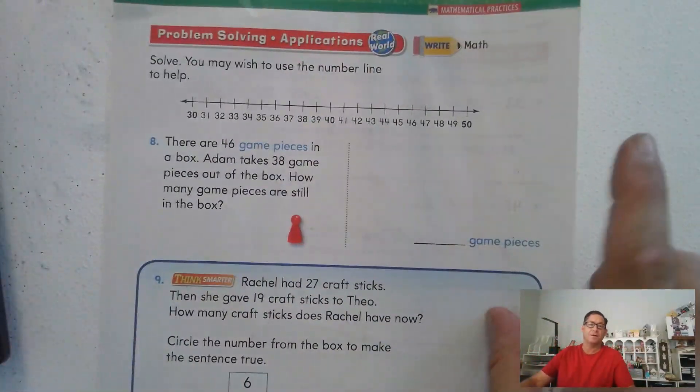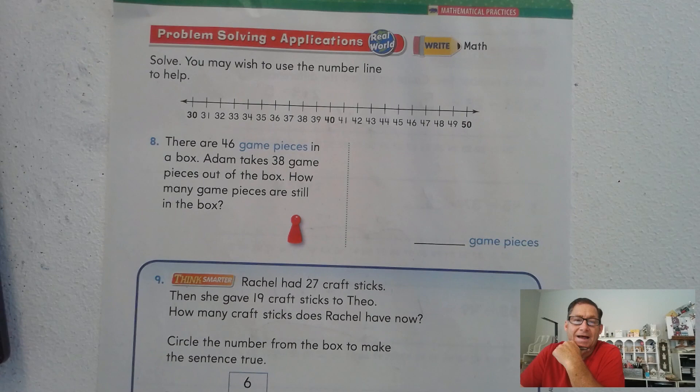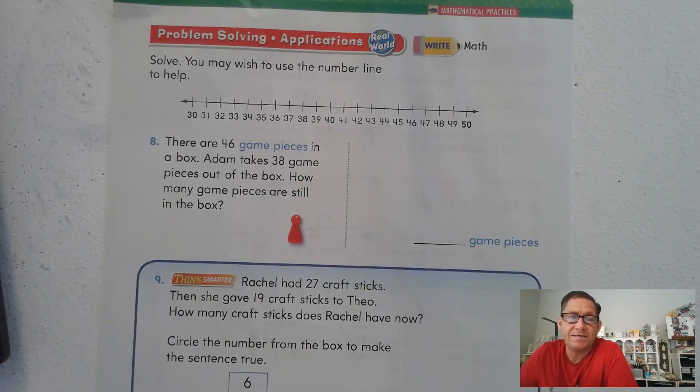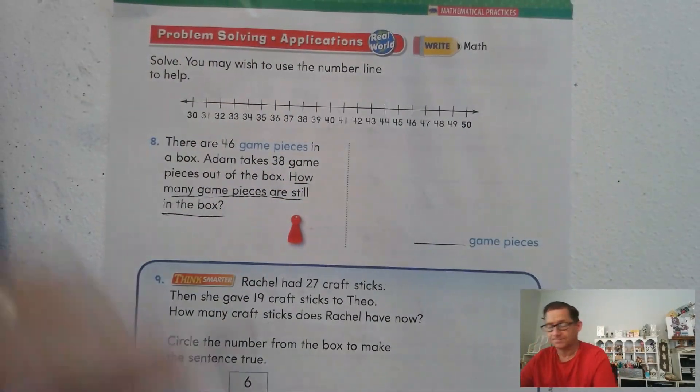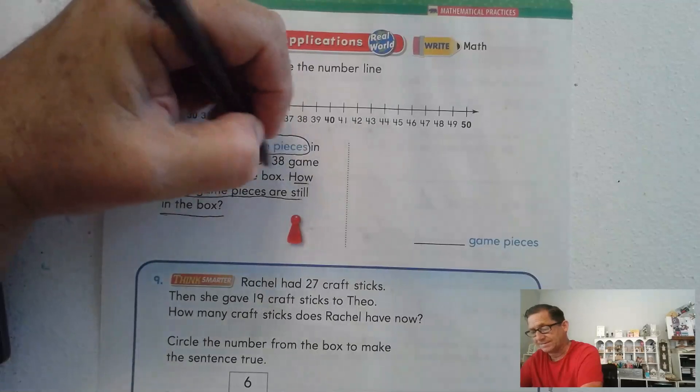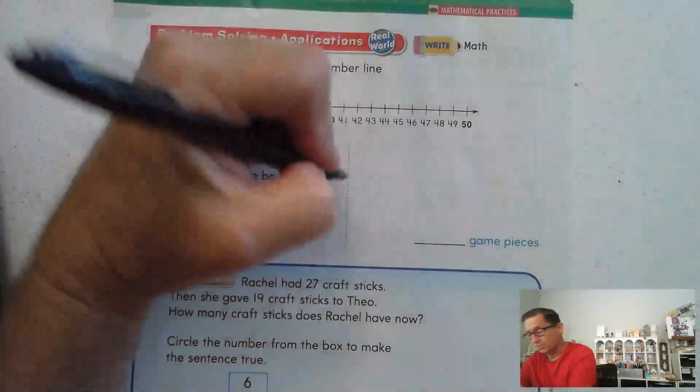Page 260. Solve. You may wish to use the number line to help. There are 46 game pieces in a box. Adam takes 38 game pieces out of the box. How many game pieces are still in the box? So we started with 46 game pieces and he took 38 out.